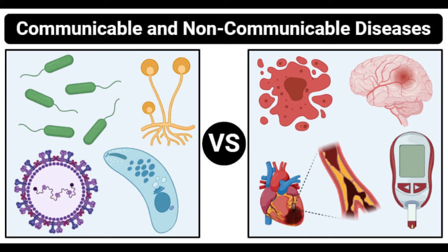Comparing the two: Communicable diseases are caused by infectious agents and can be transmitted from an infected person to other people, animals, or other sources in the environment. Non-communicable diseases are not transferred from an infected person to another via any means and are mostly caused by factors like improper lifestyle and eating habits. Communicable diseases are also known as infectious diseases; non-communicable diseases are also known as chronic diseases.